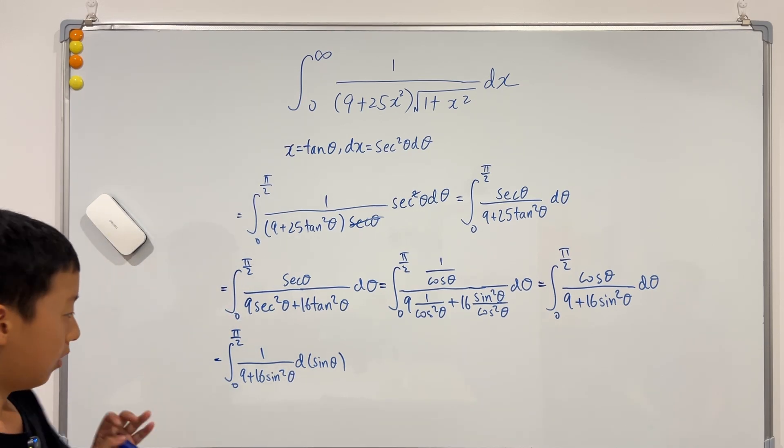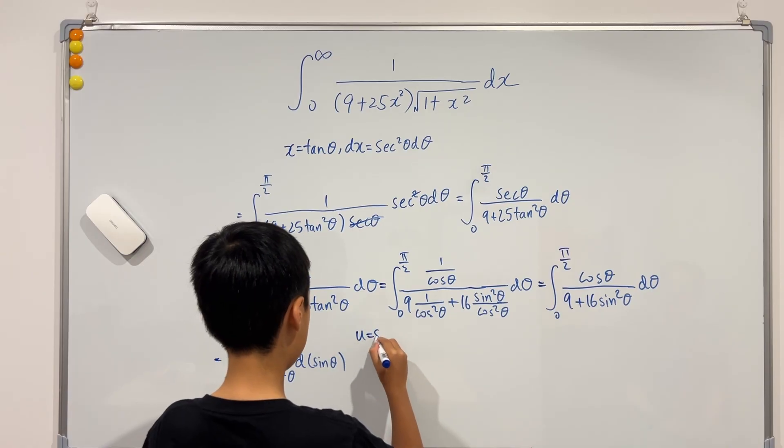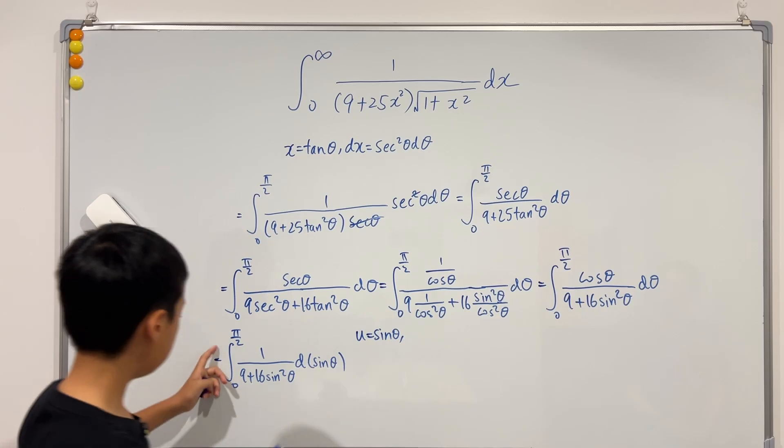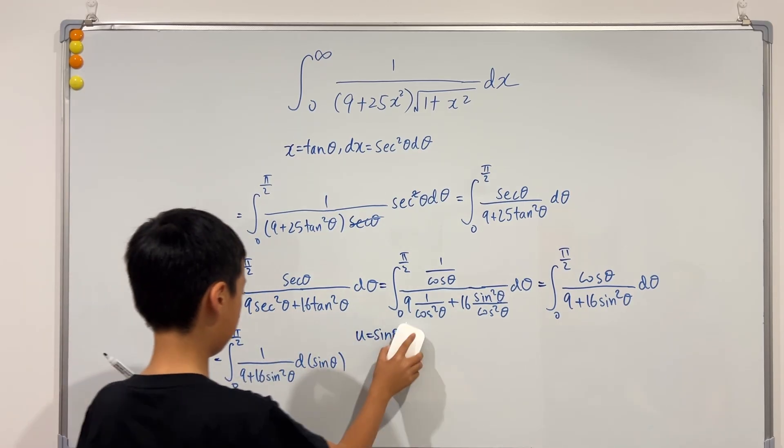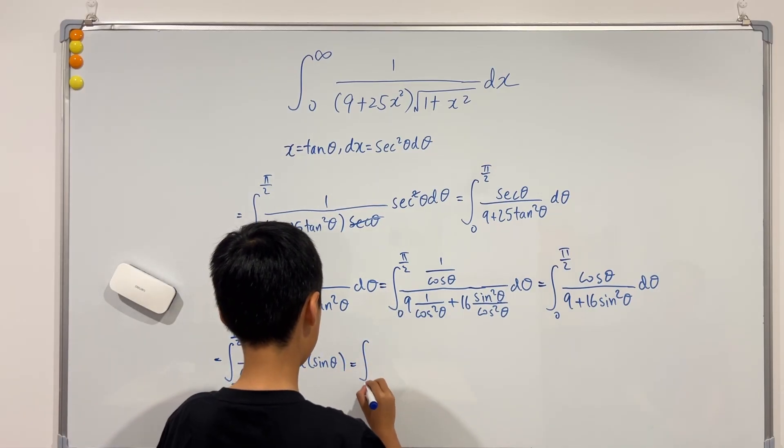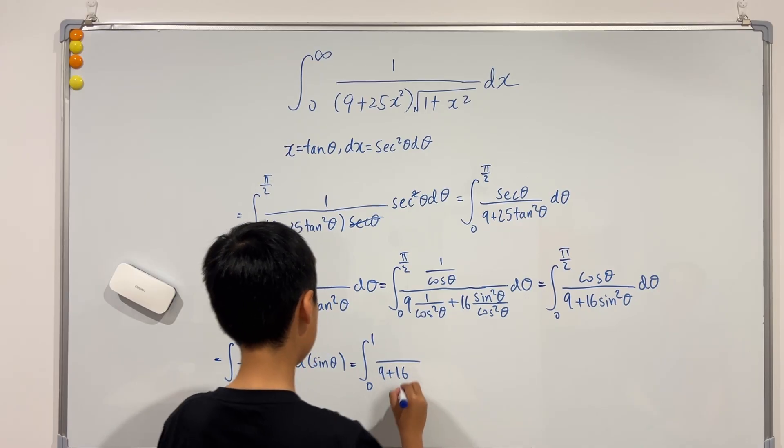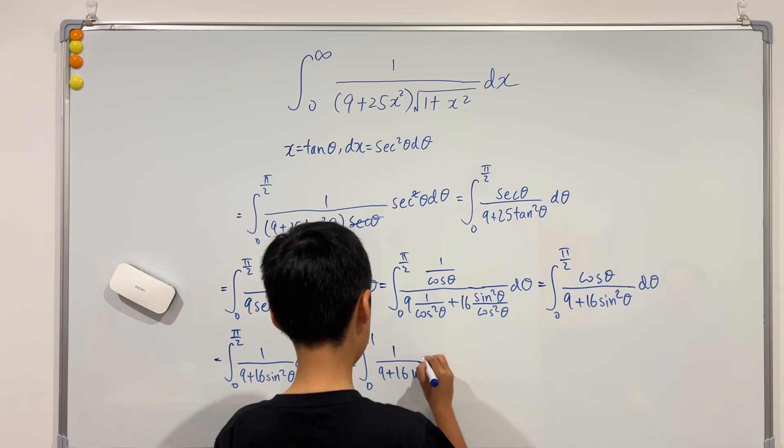So now I can do a simple u sub. We can just let u to be sine. And the bounds, instead of going from 0 to pi over 2, we have to go from 0 to 1. 9 plus 16 u squared, du.